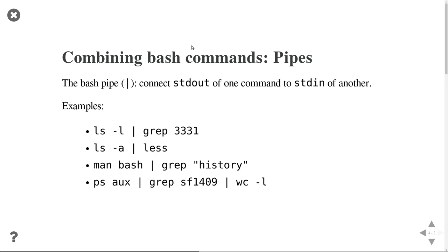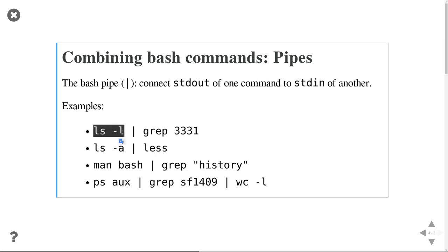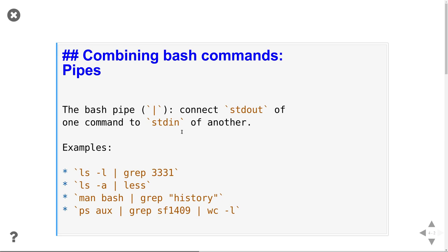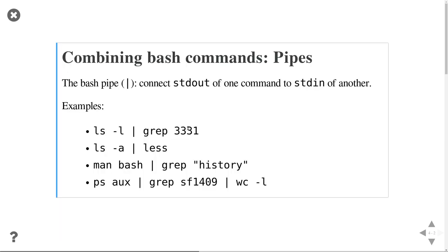Here are some examples. The first one: I list files in my current directory in long format, then pass that output into the grep command. Grep is a filter that simply filters lines containing the word 3331. So this command together lists all files and directories in my current directory that contain the name 3331.